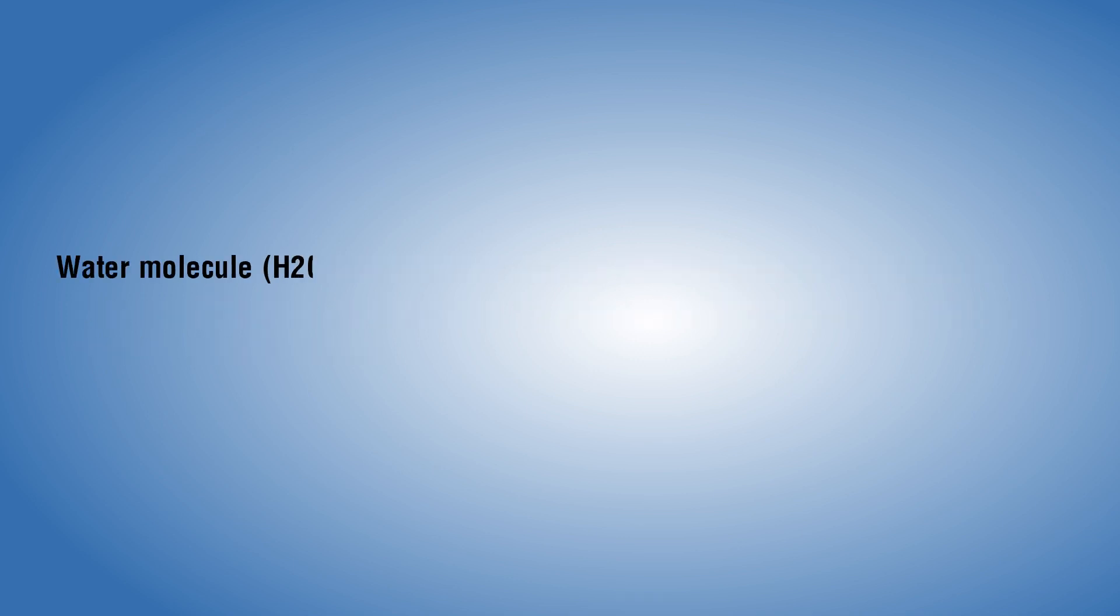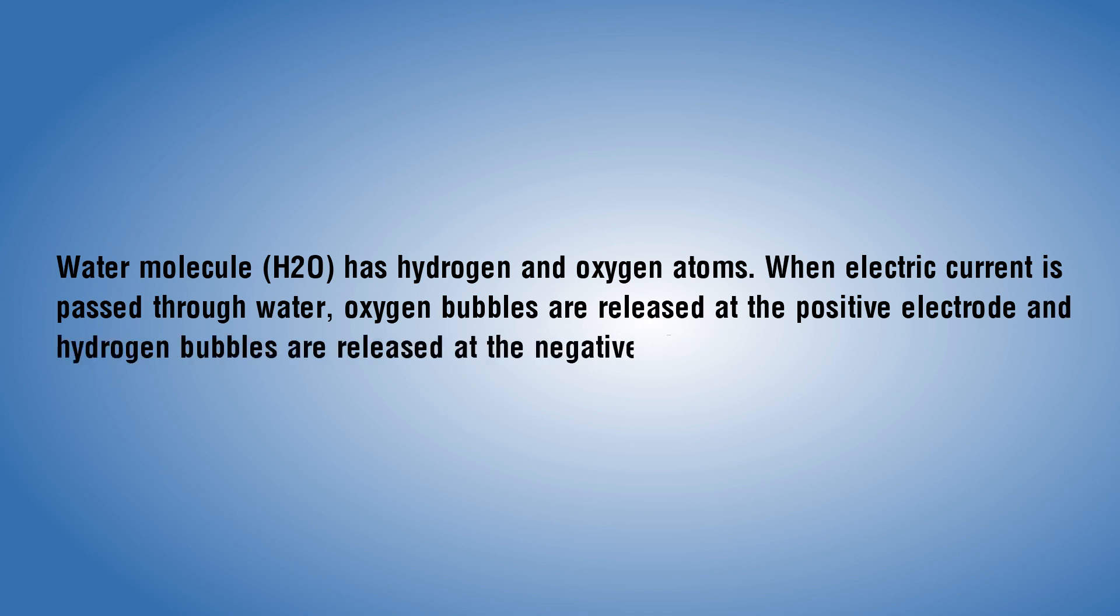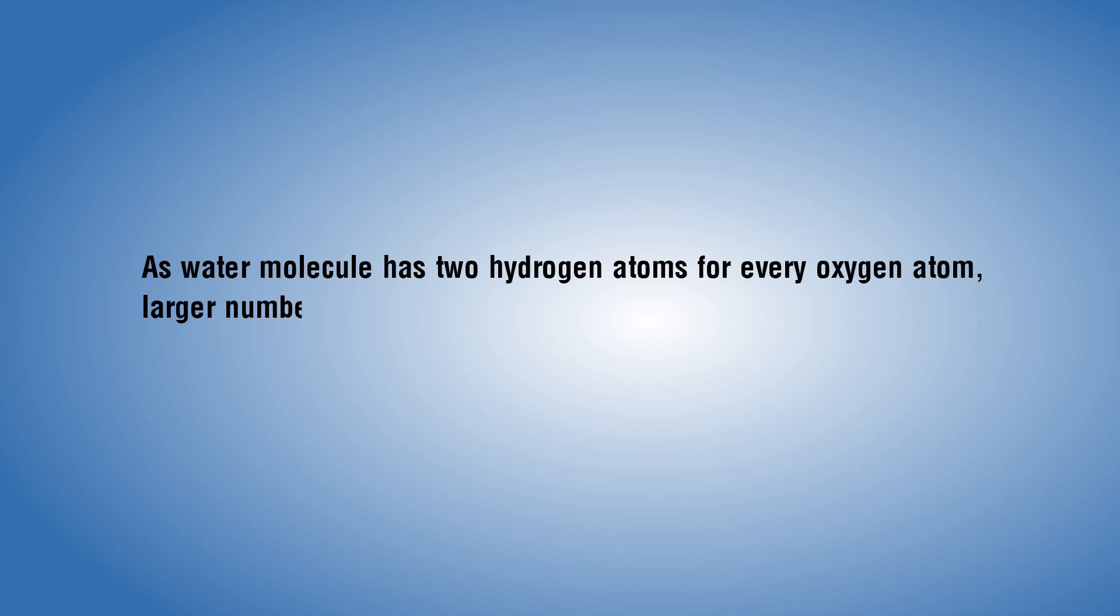Water molecule H2O has hydrogen and oxygen atoms. When electric current is passed through water, oxygen bubbles are released at the positive electrode and hydrogen bubbles are released at the negative electrode. As water molecule has two hydrogen atoms for every oxygen atom, larger number of bubbles are formed at the electrode connected to the negative terminal of the battery.